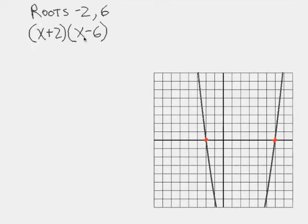Okay, now that we've got our factors, I can use the sum and product rule and get our quadratic equation. So x squared, sum is negative 4, product is negative 12. So there's our quadratic equation.